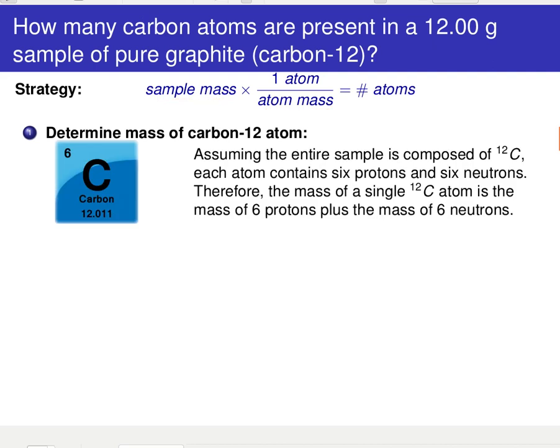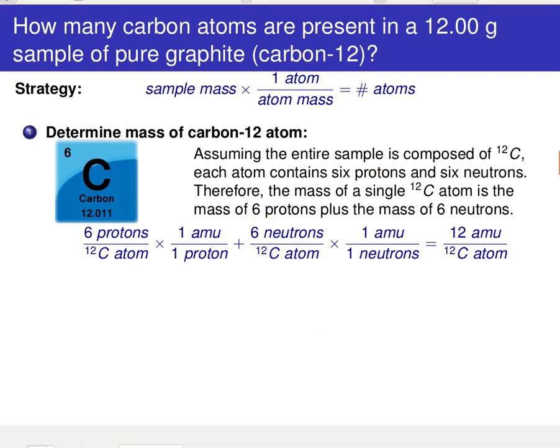Okay, so if we go ahead and make the assumption that this entire sample is comprised of C12, carbon 12, then each atom in this sample has exactly six protons and six neutrons. So we can take our six protons per C12 atom, multiply by the one amu per proton, and get our proton contribution to the overall mass. Do the same thing with the neutrons, and we get our neutron contribution to the mass. And then we conclude that each atom is weighing 12 amu.